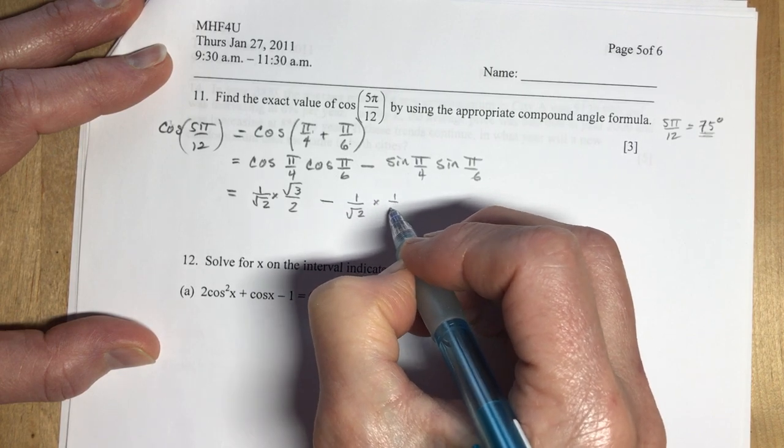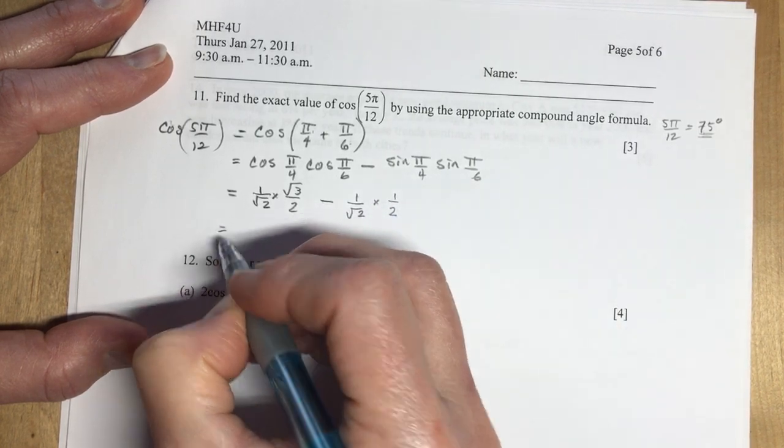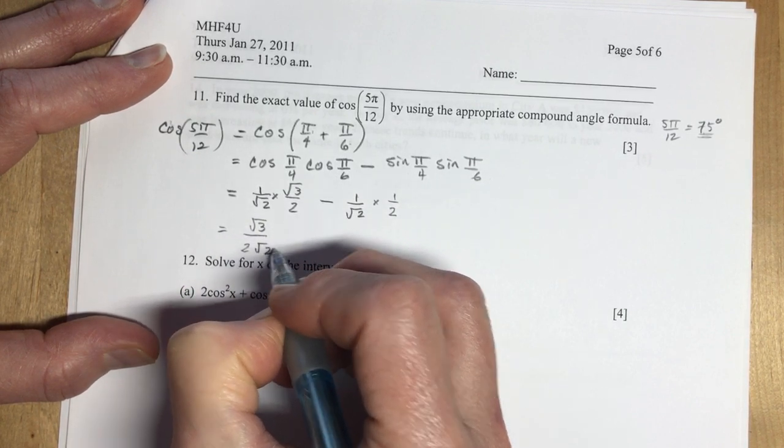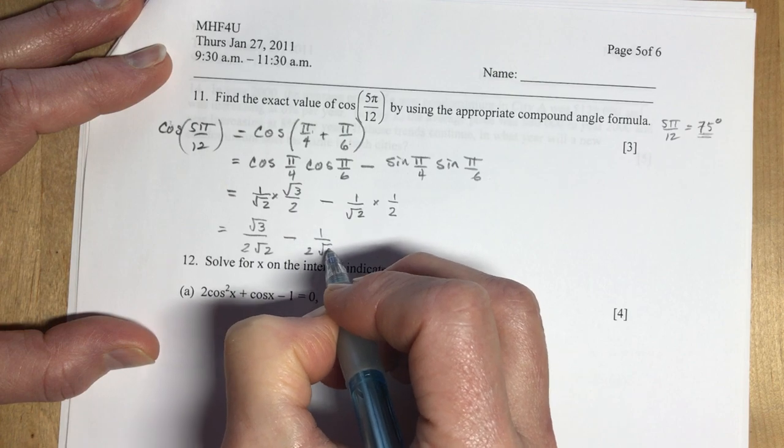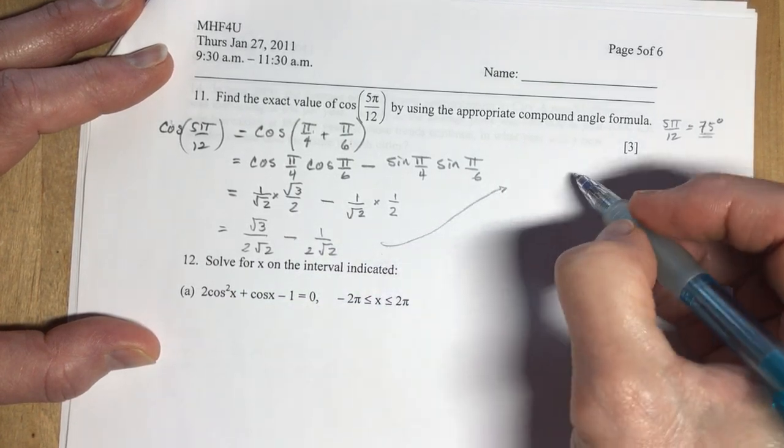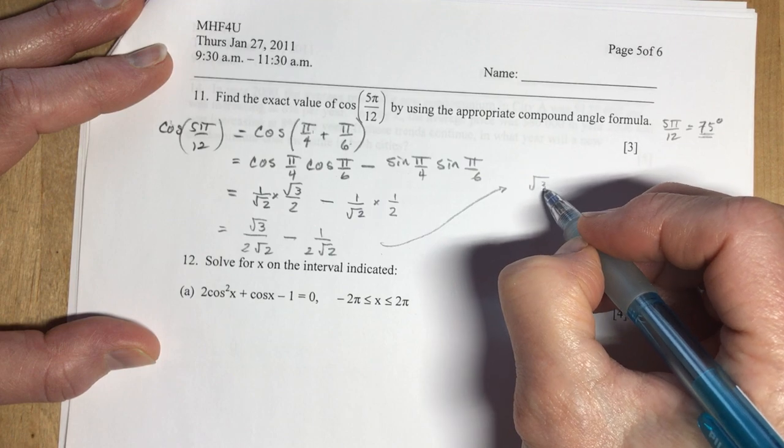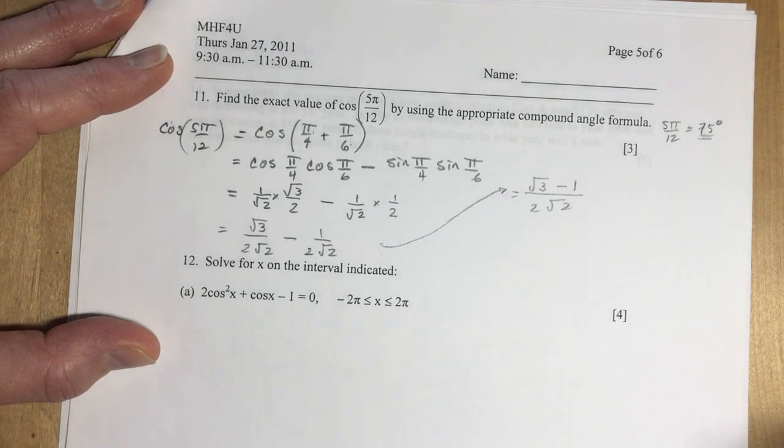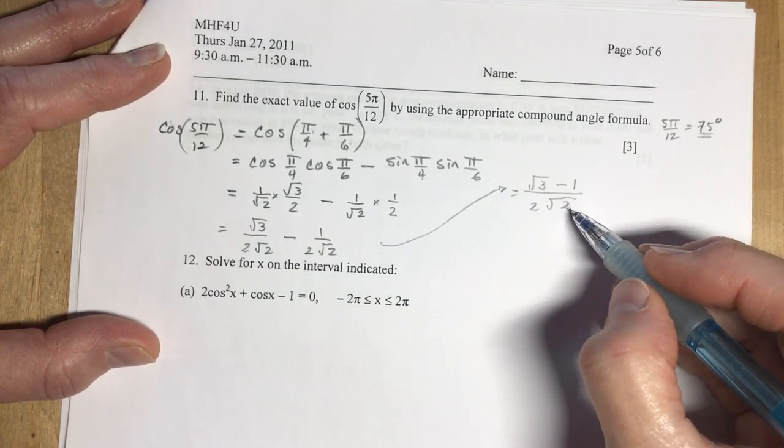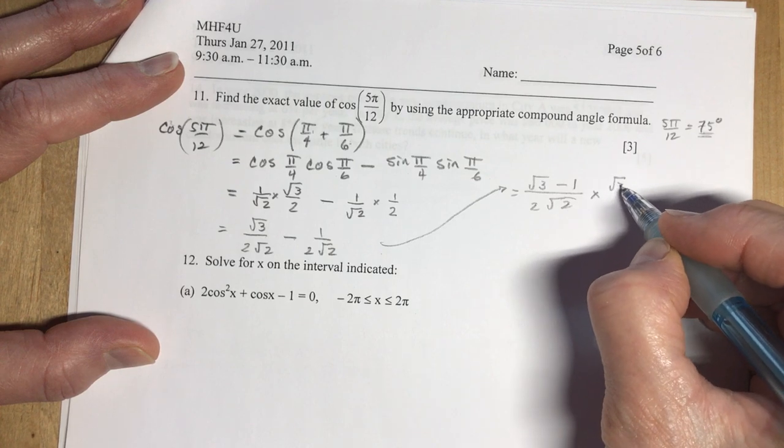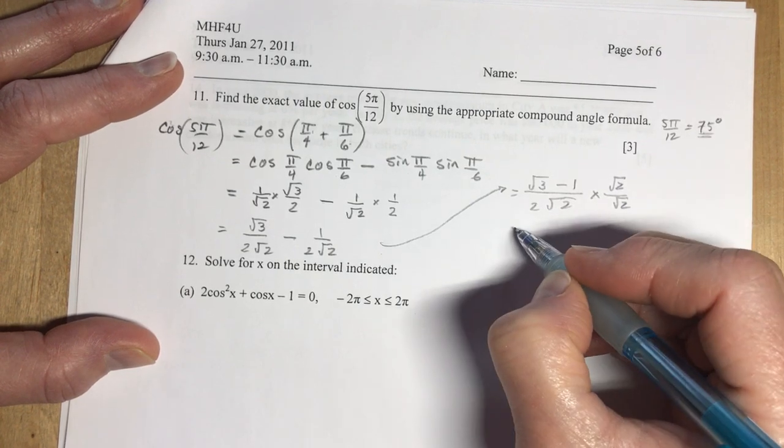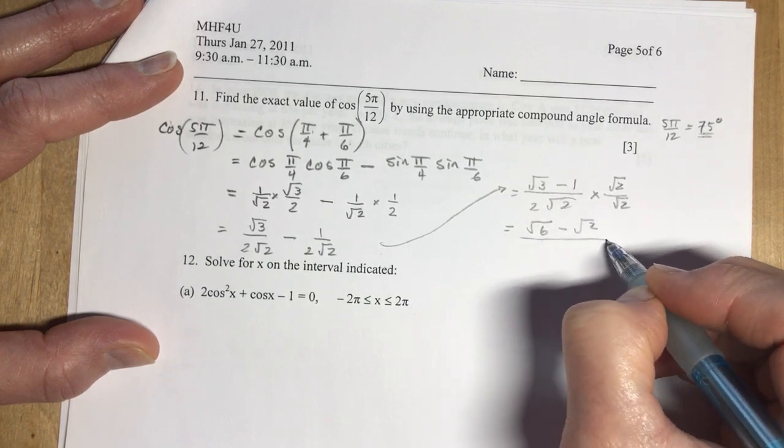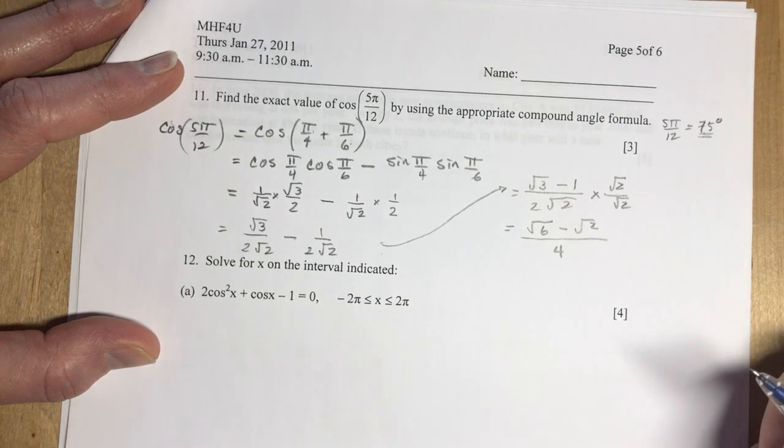So I have that, and I'm minusing sine of π over 4 is 1 over root 2, and the sine of π over 6 is 1 half. This gives me root 3 over 2 root 2 minus 1 over 2 root 2. So root 3 minus 1 over 2 root 2. Now this would not be good enough for a final solution because you would be expected to rationalize this denominator. So I'm going to multiply by root 2 over root 2 to finish this off. That gives me root 6 minus root 2 over 2 times 2 is 4. There you go.